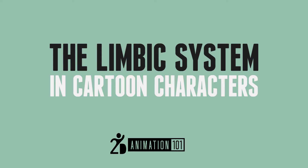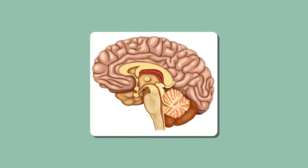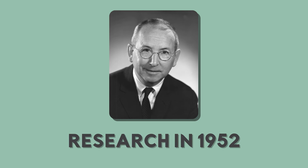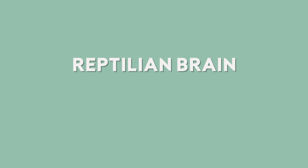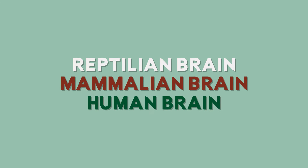To understand what the Limbic System is, we have to understand a bit about our brain. According to Paul McLean and his research back in 1952, there are three parts of our brain: the reptilian brain, the mammalian brain, and the human brain.